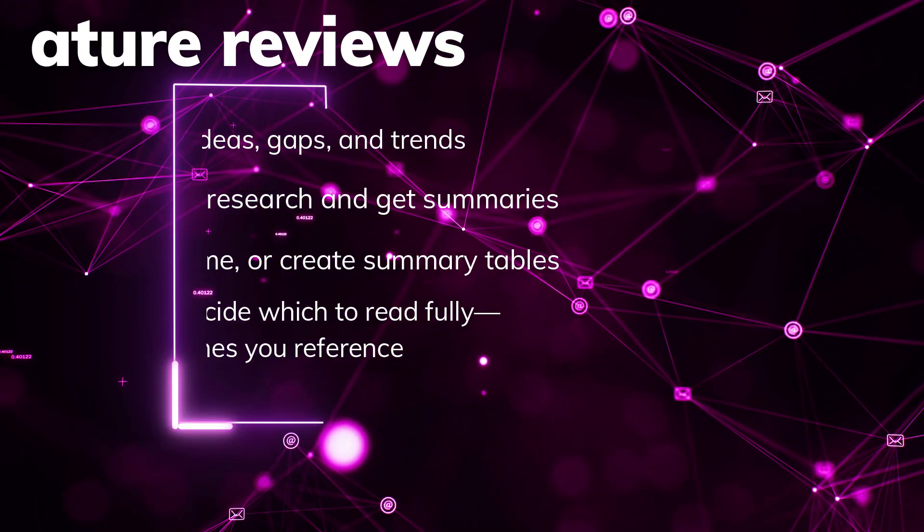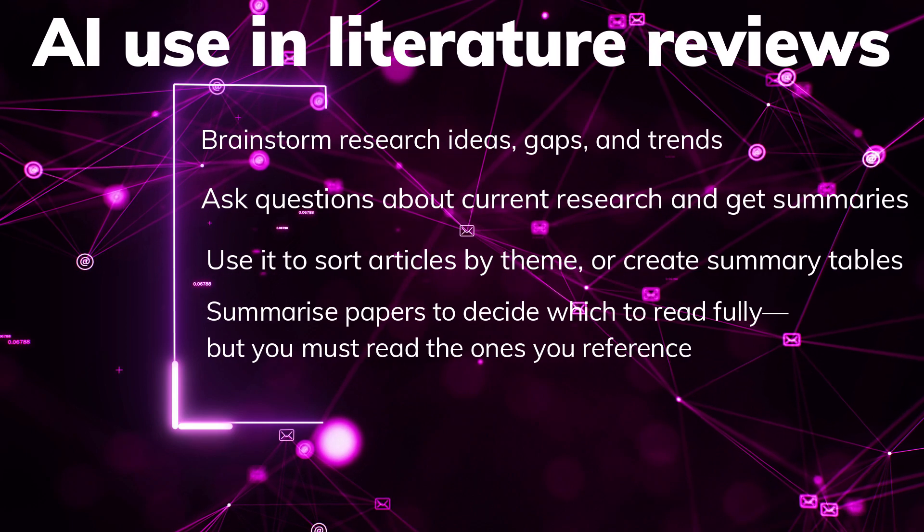Now let's talk about how you can use AI. Most of these things will be something you're aware of and probably something you've already been doing. These come from university websites, so universities do understand that you can and probably should use AI for these purposes. During the literature review, for example, you can use it to support your exploration of the literature. You can use it for brainstorming, coming up with ideas for research gaps, trends within the data, or asking questions about current research and getting summaries.